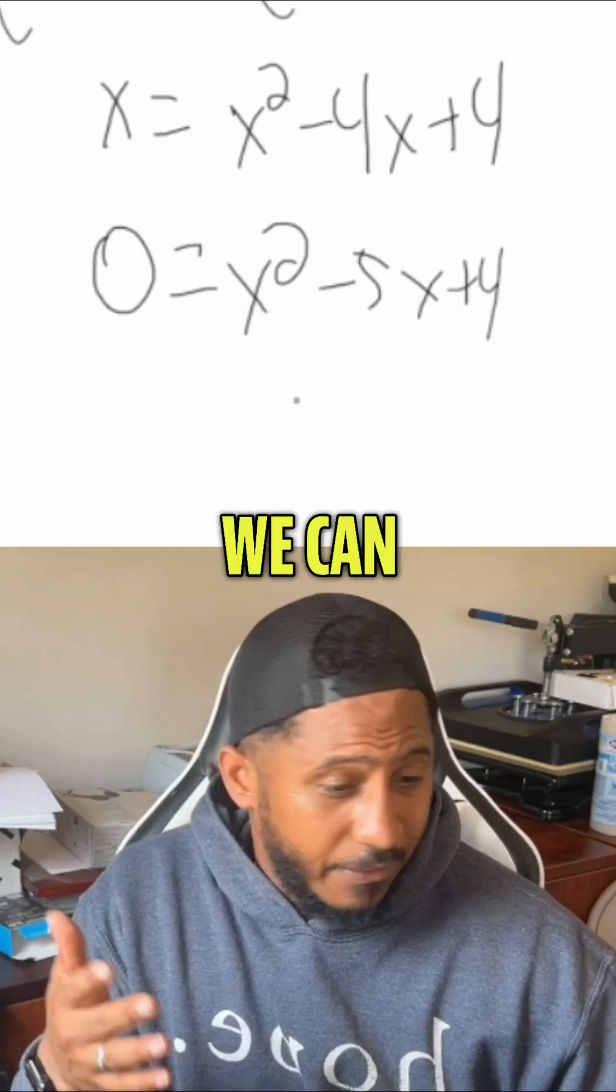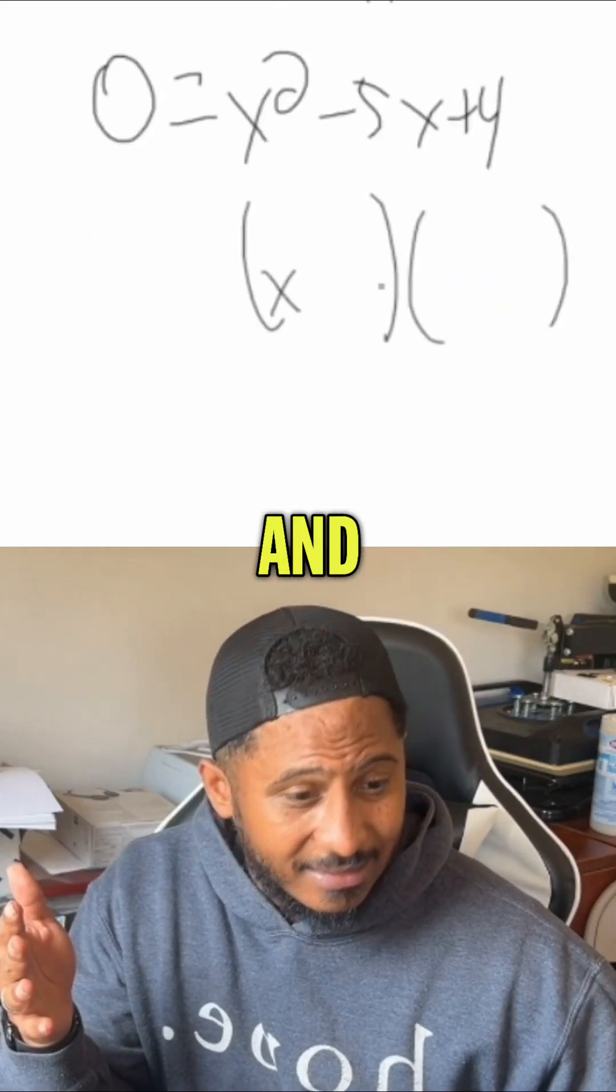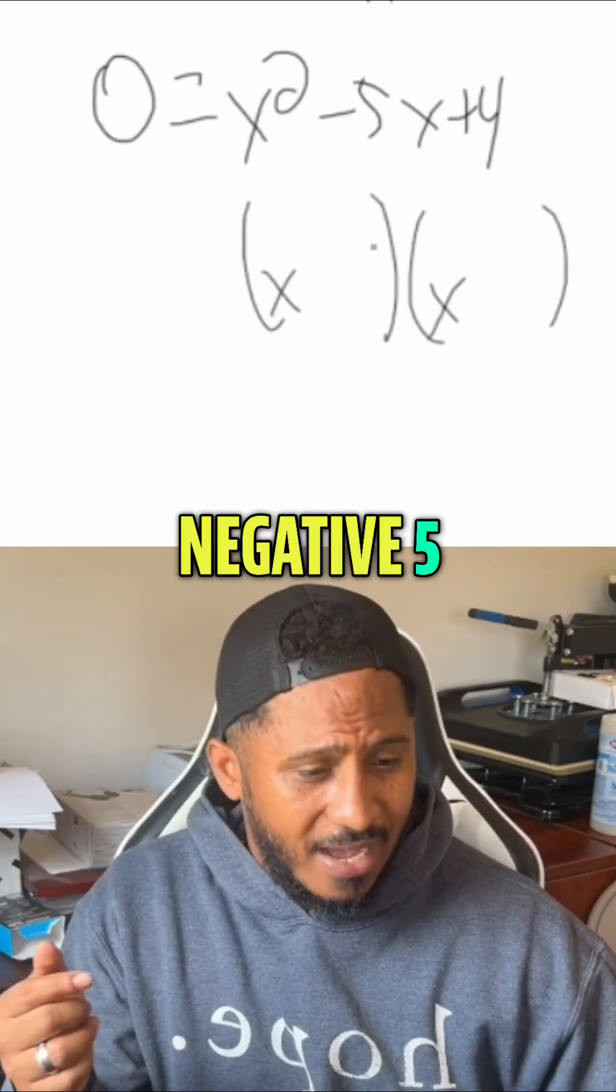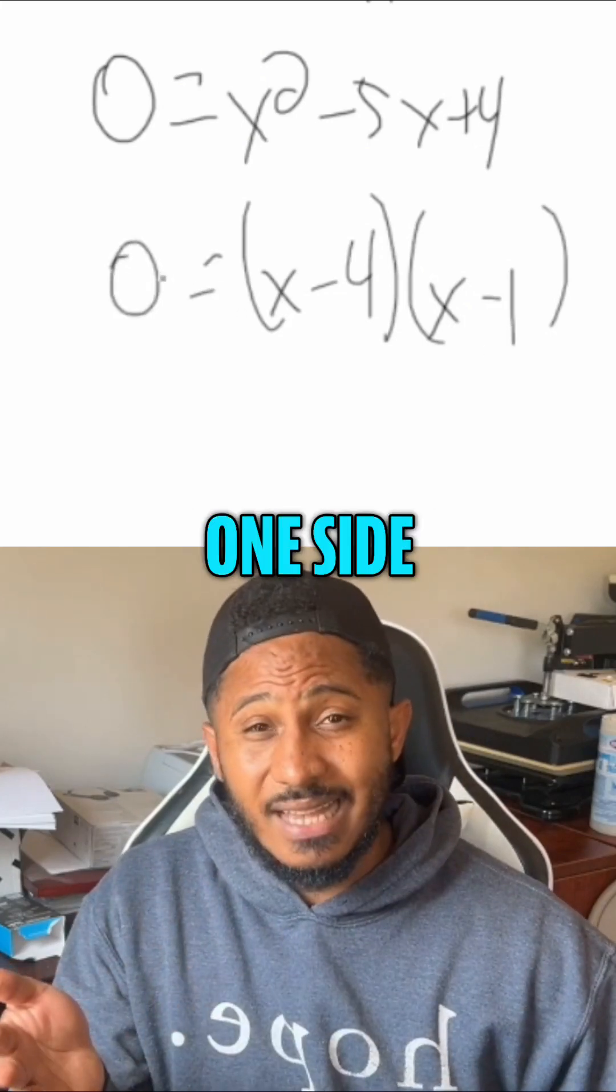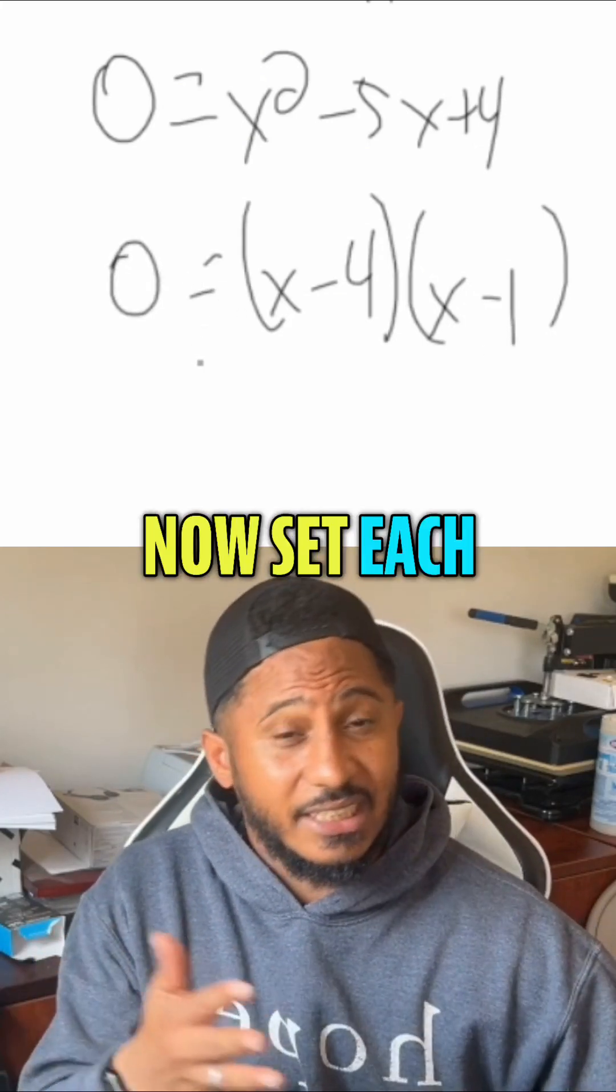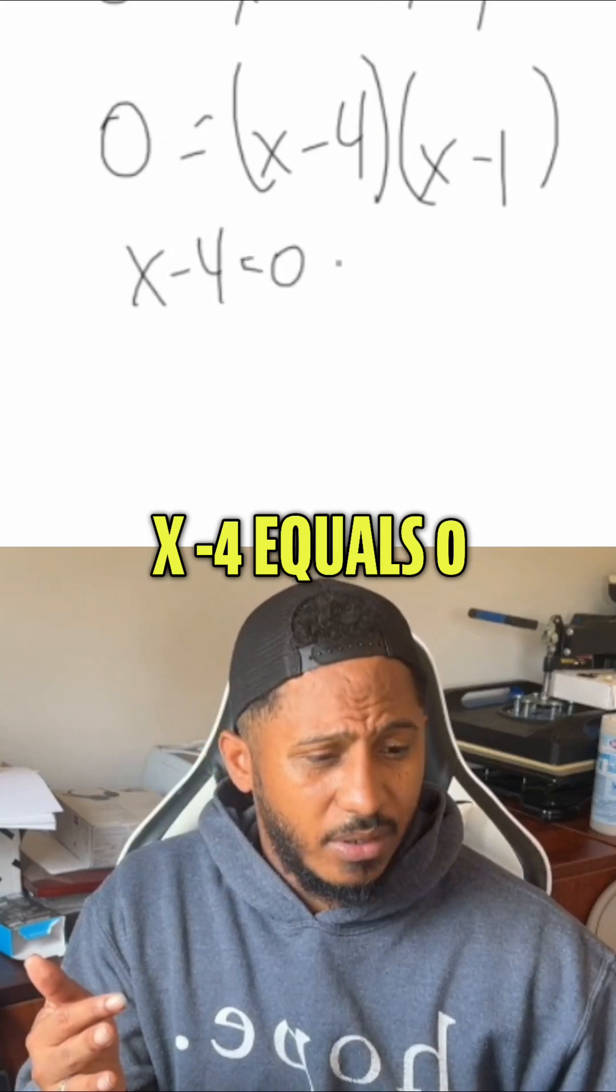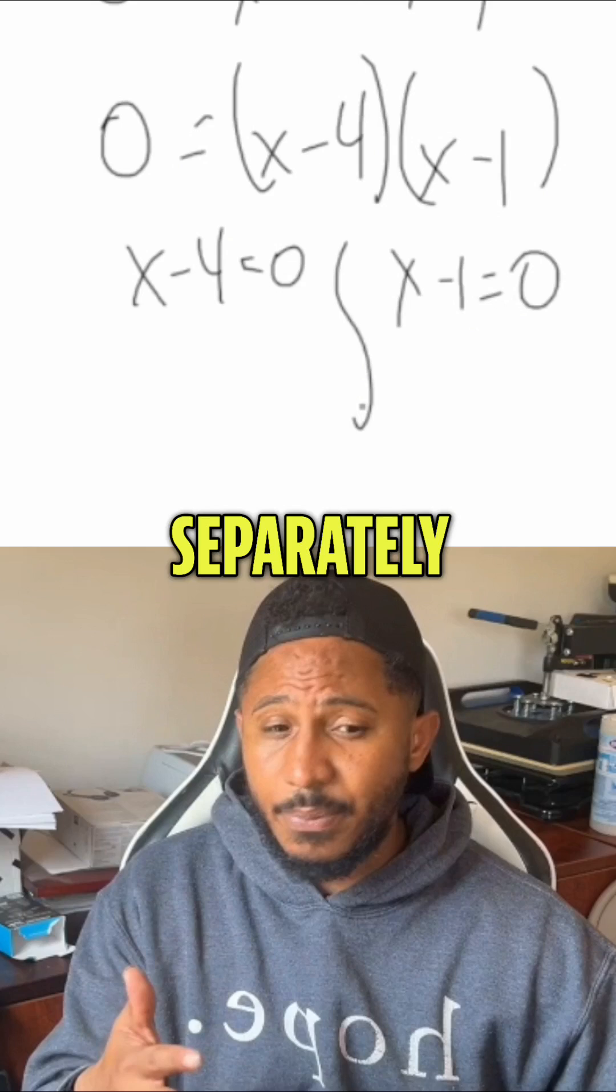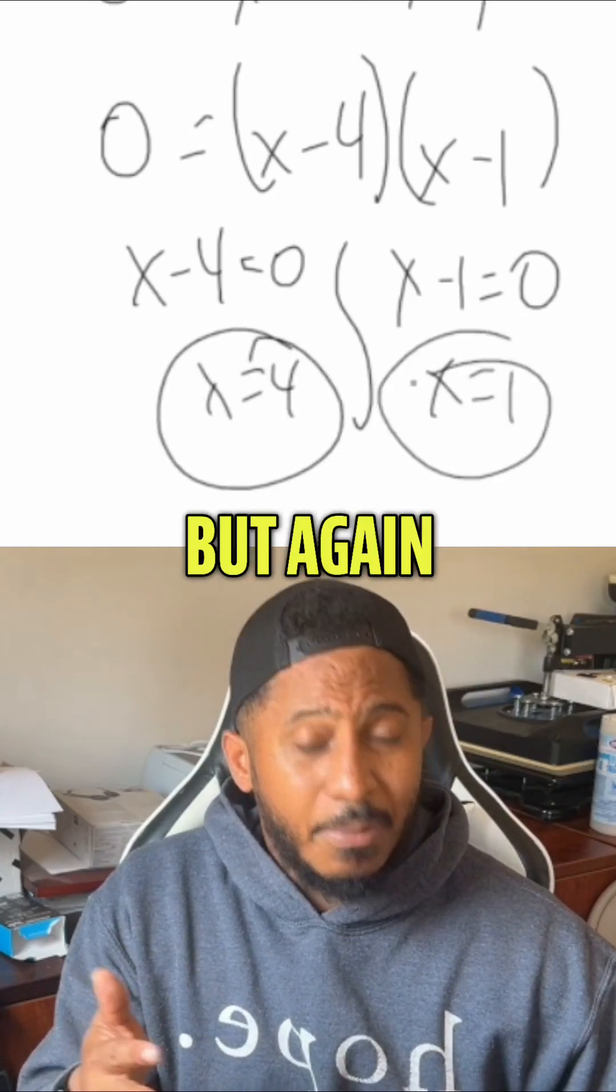Now factoring the other side, we can factor this pretty easily. X and x. We notice that multiplying gives 4, combining gives negative 5. So in this case, that would be negative 4 and negative 1. We get 0 on one side, factor the other side, and set each factor equal to 0. So x minus 4 equals 0, and x minus 1 equals 0. Solving each of these equations separately, we get x equals 4 and x equals 1.